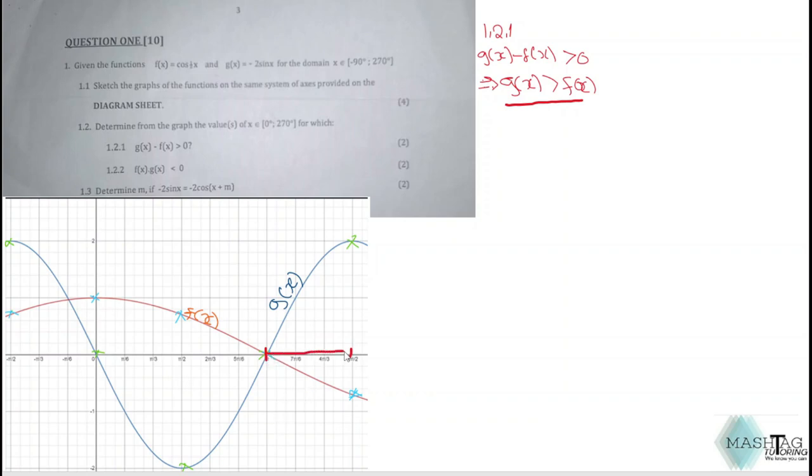That means our domain is when x is between 180° and 270°. Notice that we have different signs here. We're saying x when it's greater than 180° because we can't say equal to 180° because at 180° they're actually the same, that's where they intersect, where they have the same value. Therefore, you can't say any graph or any function is greater than the other.